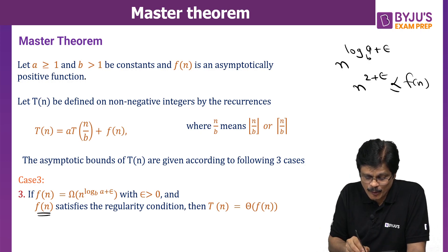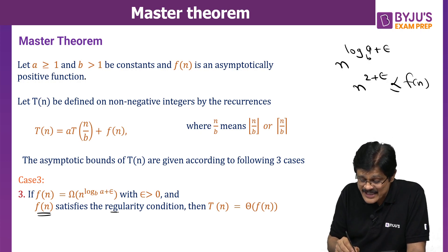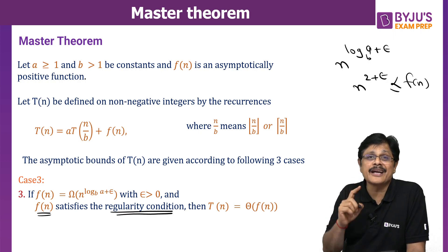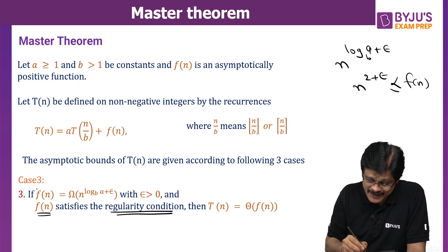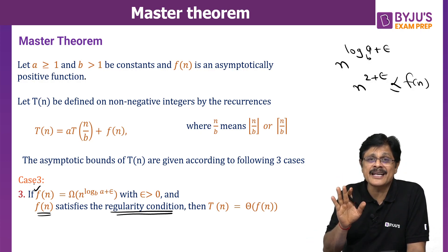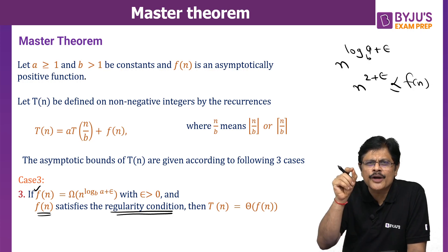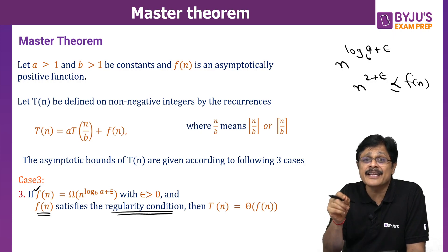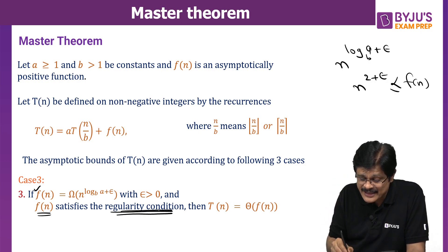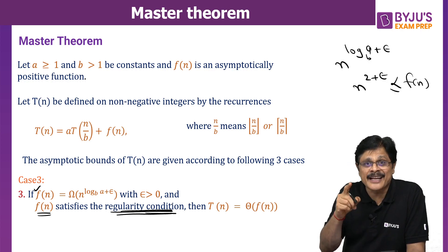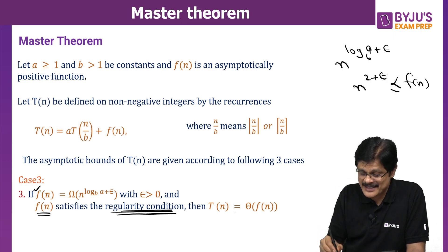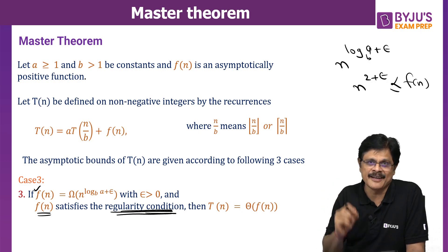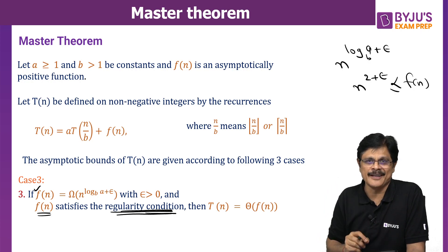However, there is one more condition that must be satisfied beyond F(n) being Ω(n^(log_B A + ε)). After that condition, if F(n) also satisfies the regularity condition, then in that particular case T(n) is Θ(F(n)).